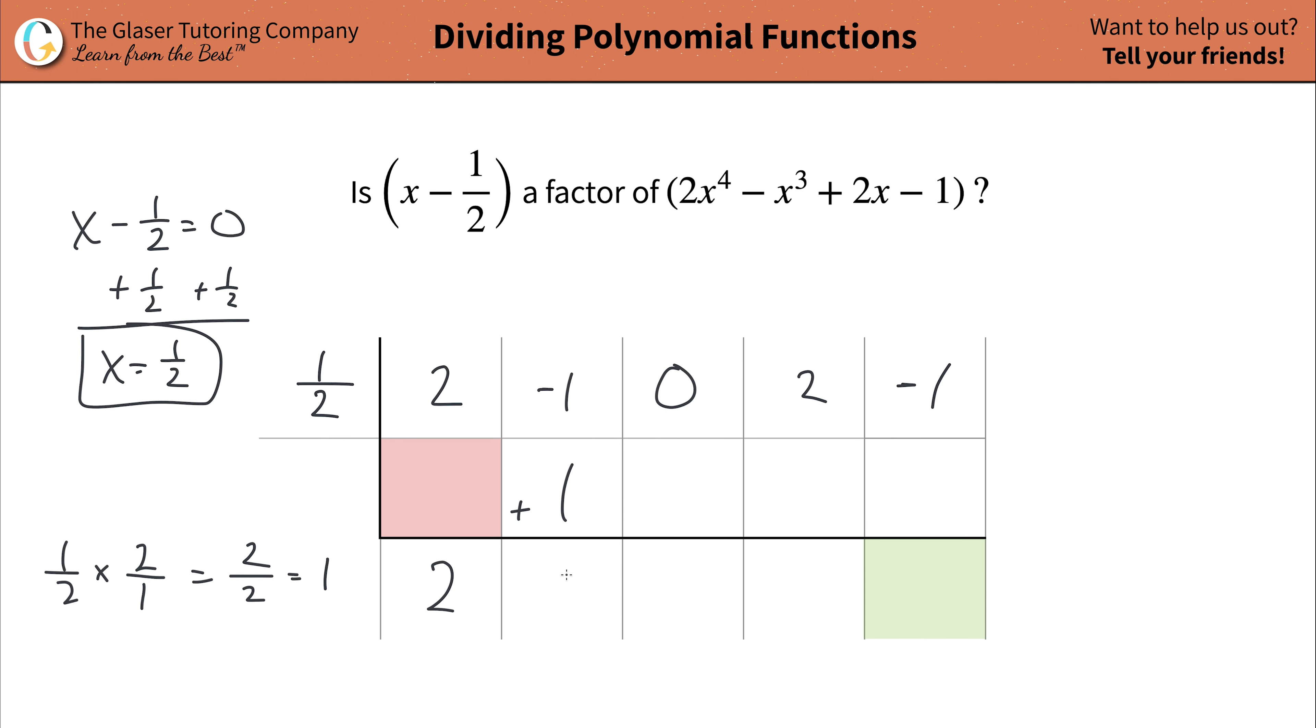Then add this column together for a total of zero. Now repeat the process. Take zero, multiply it by the one half, that's a total of zero. Put it in the next adjacent cell there. Add that column together. That's going to be a total of zero. Repeat the process. Take the zero, multiply it by that outer term of one half. That's also a zero. Add this column together. That works out to be a total of two. And again, take the two, multiply it by one half. And that's going to come out to be positive one. Add this column together, and we get a value of zero.